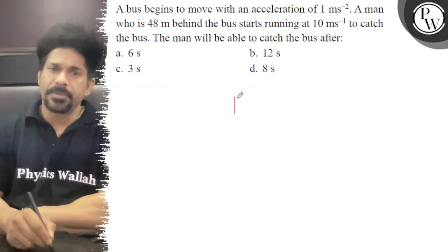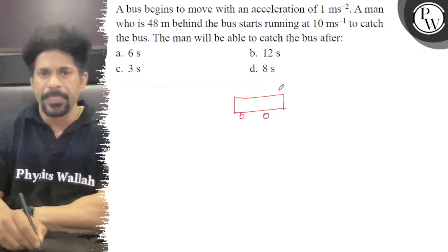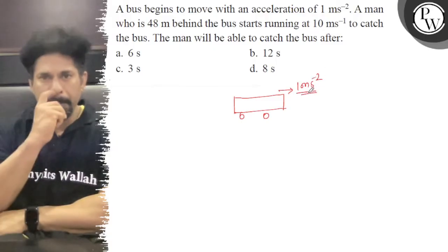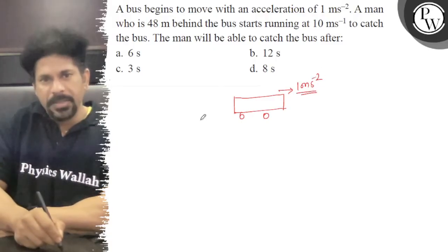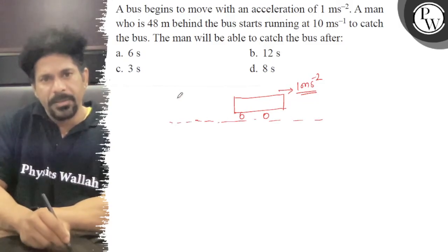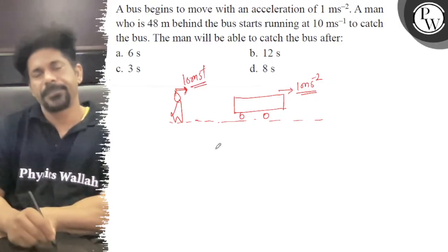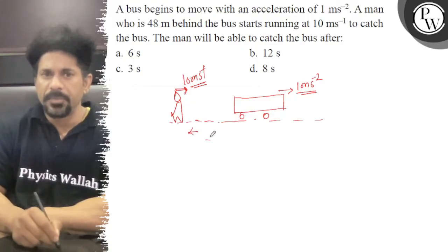So yeah, okay. The bus is running with 1 meter per second squared from rest. At the same time, the person 48 meters behind starts running at 10 meters per second to catch the bus. So after what time will that man catch the bus over this distance of 48 meters?